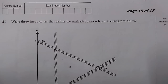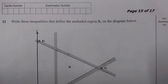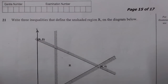Hello viewers, in this video I'll work out question 21 from a 2021 grade 12 internal math paper 1. This question is on linear programming and it reads: write three inequalities that define the unshaded region R on the diagram below. So this is our diagram here.